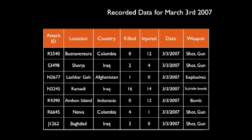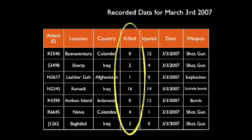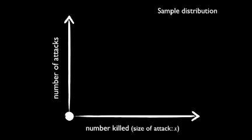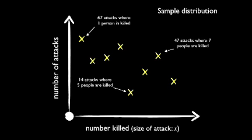Once we had this, we could start doing some cool stuff. What if we were to look at the distribution of the sizes of attacks? What would that tell us? On the horizontal axis you've got the number of people killed in an attack, or the size of the attack. And on the vertical axis you've got the number of attacks. So we plot data for a sample on this, and you'll see some sort of random distribution.